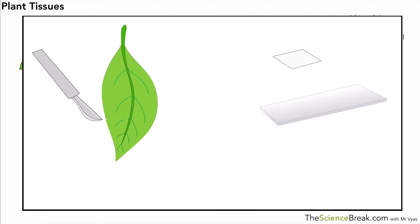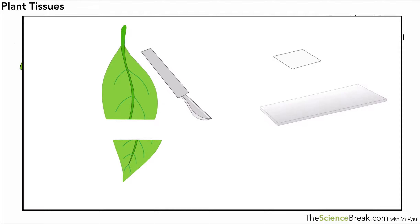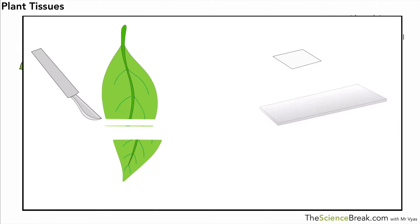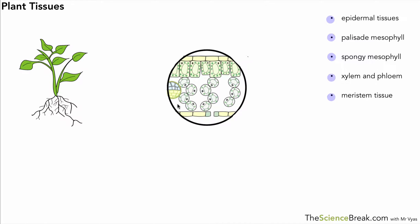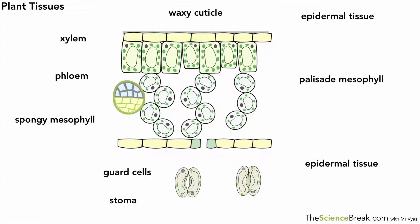If you are able to slice a leaf across and get as thin a slice as possible — as few cells thick as possible — you might just be able to see it. You can place that onto a microscope slide with a cover slip and look under the microscope. If you're lucky you might see something that looks a bit like this — that's actually a diagram, but you would see something along the lines of those kinds of cells.